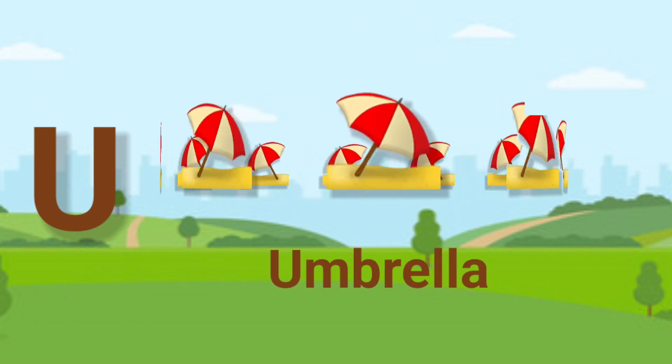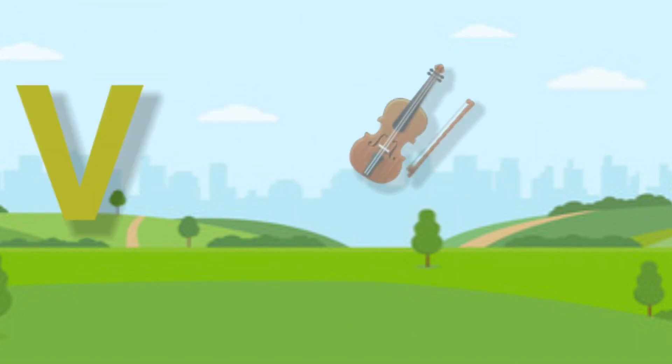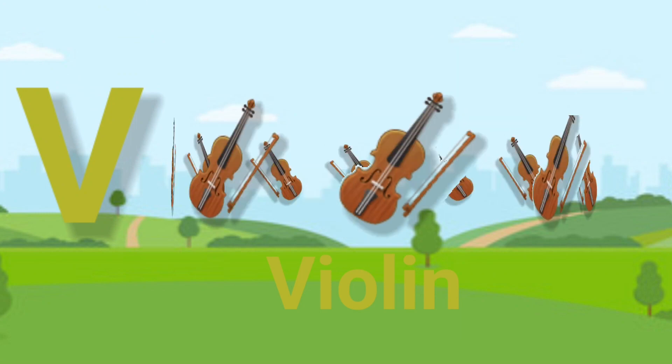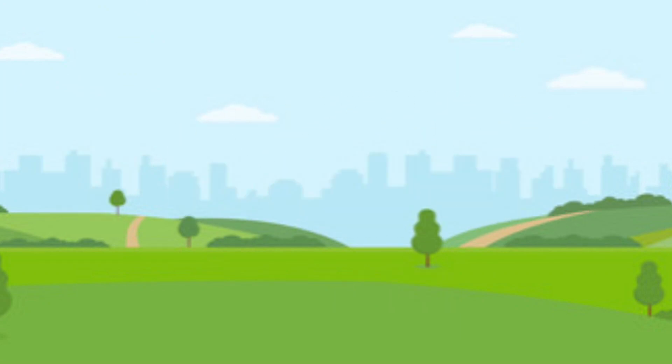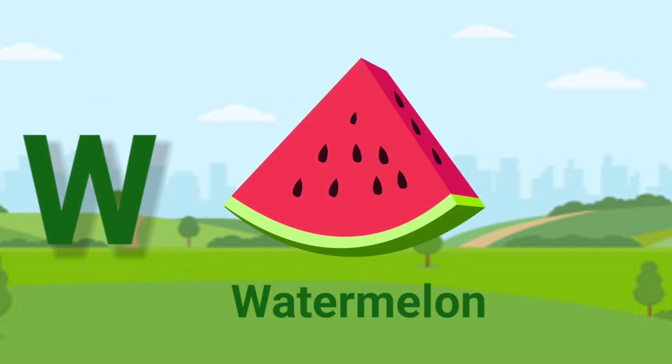Tiger. U is for Umbrella. U, U. Umbrella. V is for Violin.